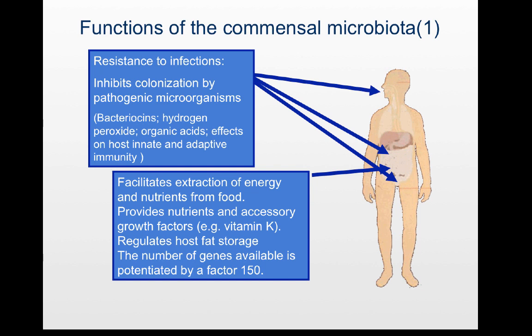There are a number of important functions of our commensal microbiota — that is the microbiota colonizing our surfaces with which we live in harmony. First of all, they add to our resistance to infections by inhibiting colonization by pathogenic microorganisms. They do this because they produce small peptides, usually called bacteriocins, which can kill other bacteria. Some produce high amounts of hydrogen peroxide, which is toxic to many bacteria. Some produce organic acids which lower the pH of the microenvironment where they colonize, thereby inhibiting other bacteria from establishing in that environment.